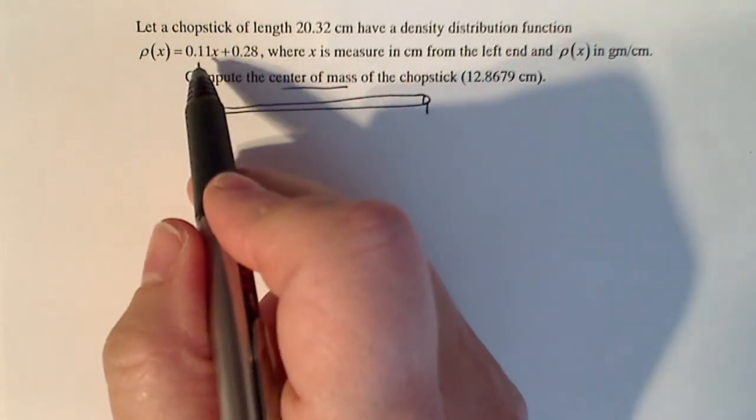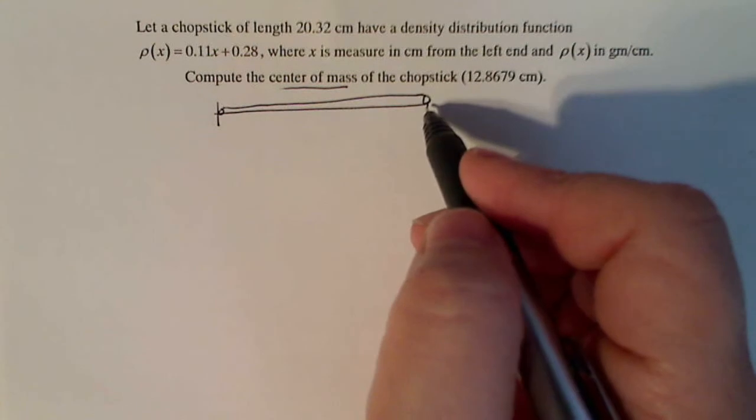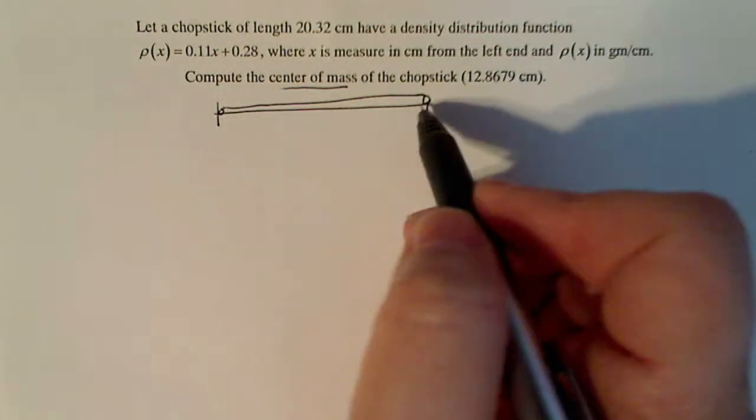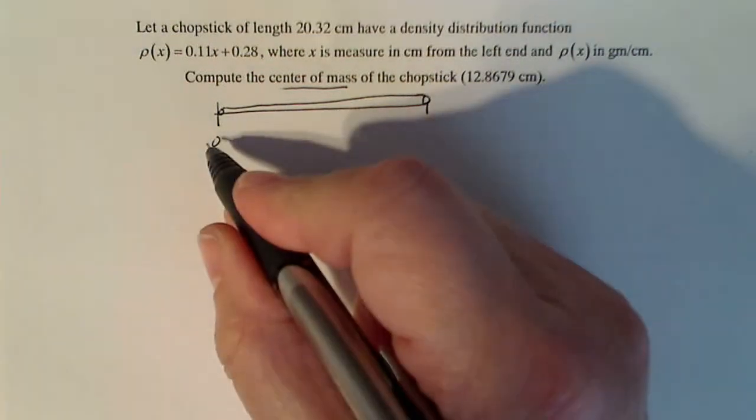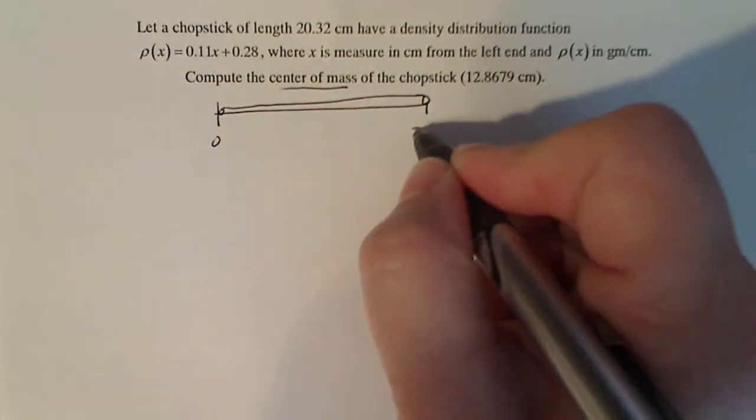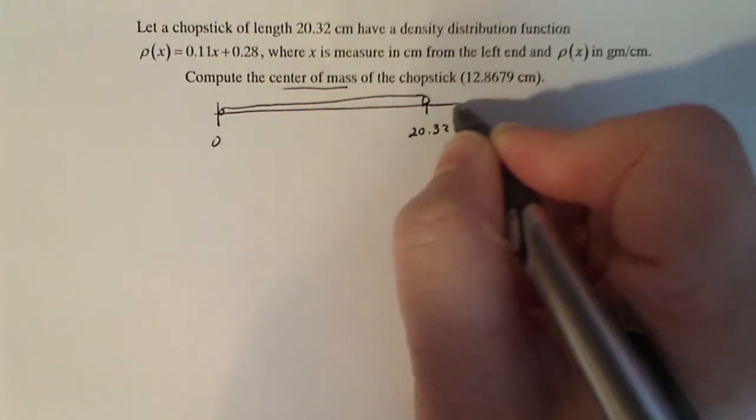That means that smaller numbers will be for smaller values of x and bigger numbers. So the density will increase as does the thickness of the chopstick. The chopstick measures 20.32 centimeters. This is the x axis.